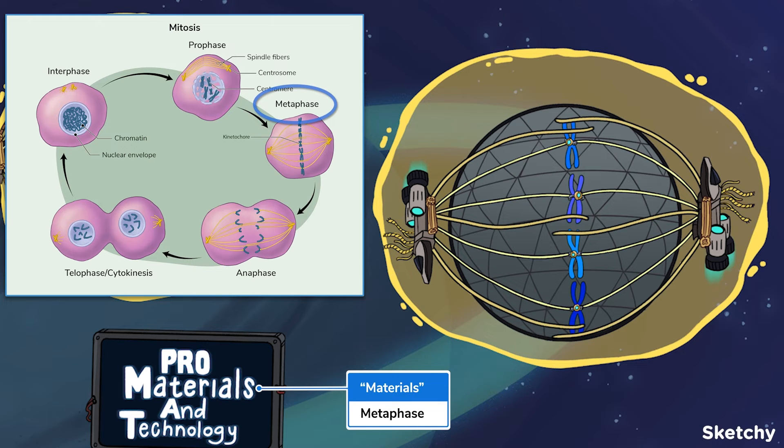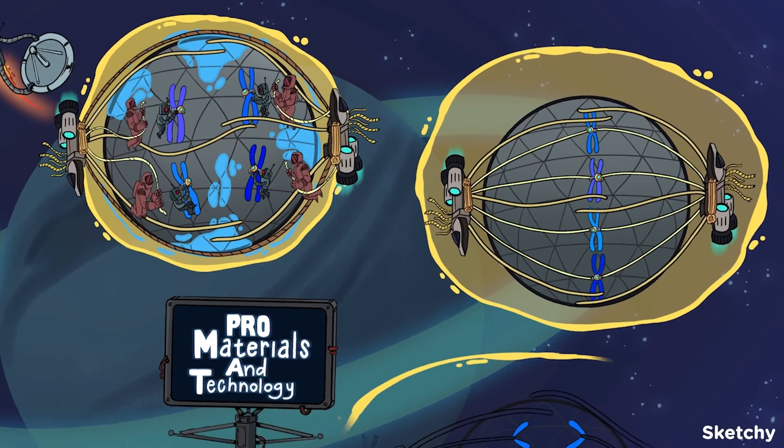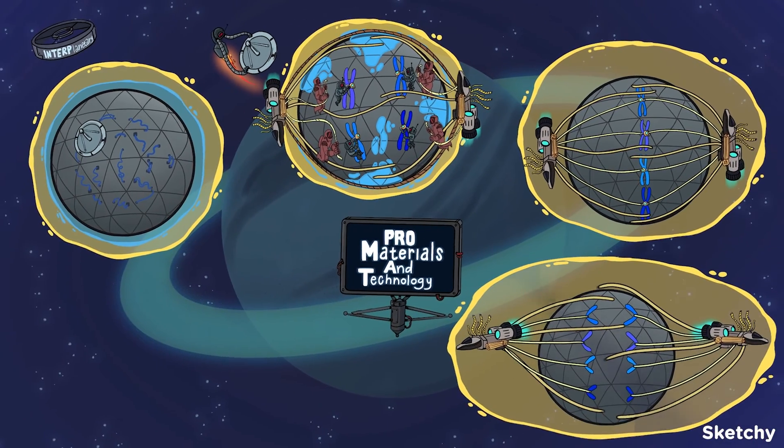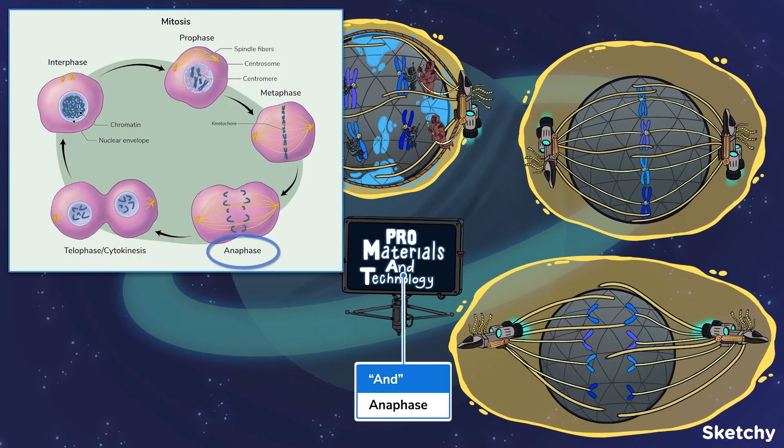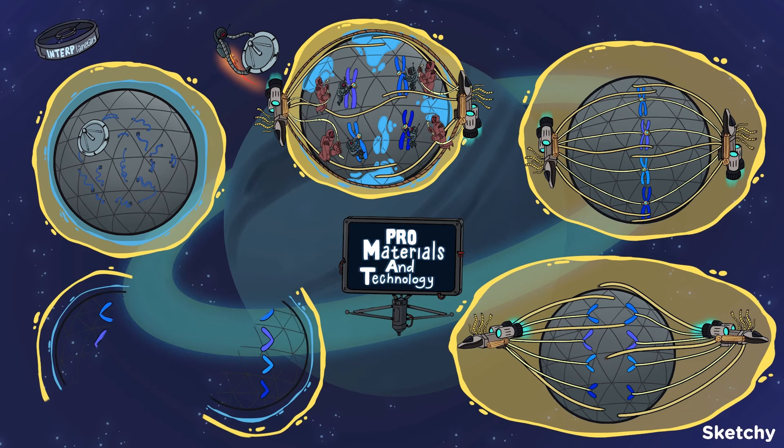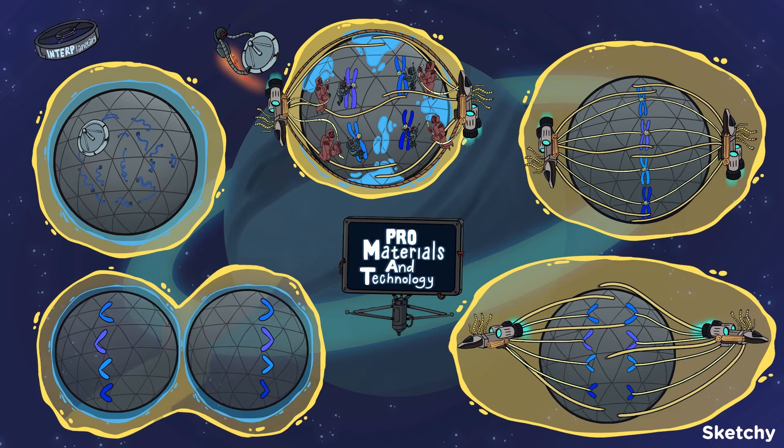The sister chromatids are now in their fully condensed form and line up at the metaphase plate. Once they're given the A-OK, the sister chromatids are pulled apart to opposite poles during anaphase. And finally, we get to telophase.